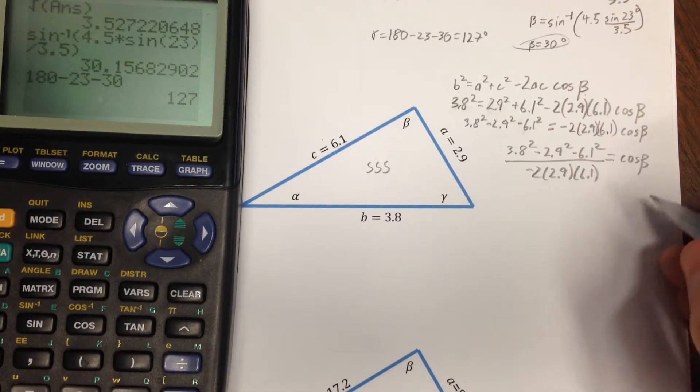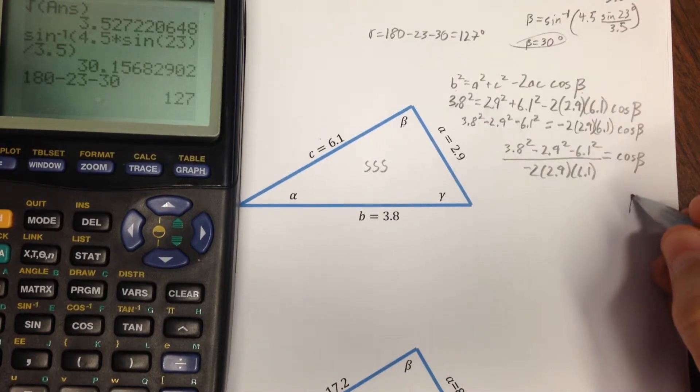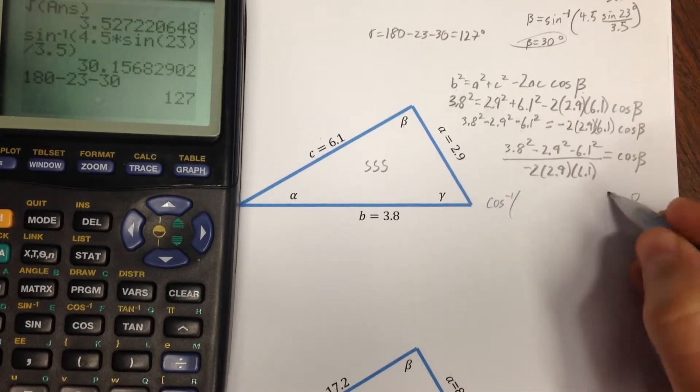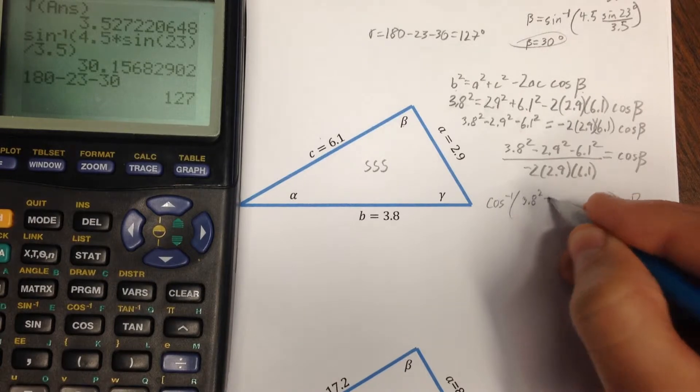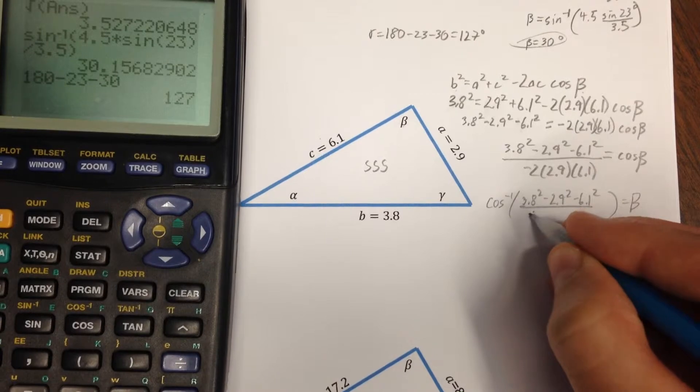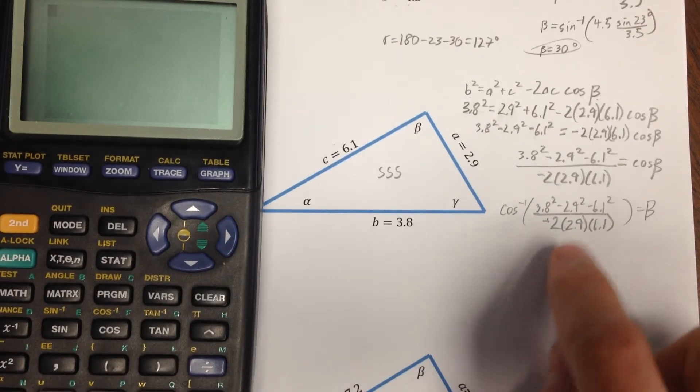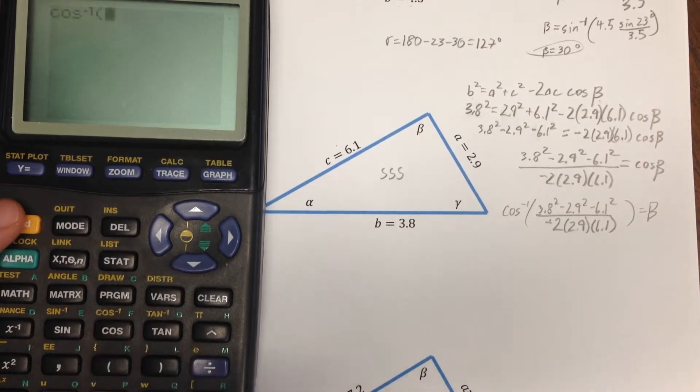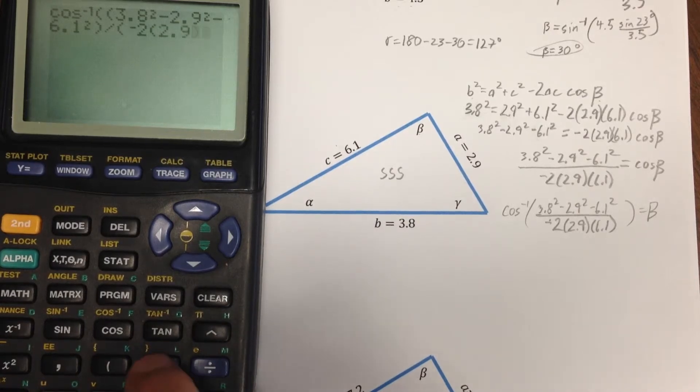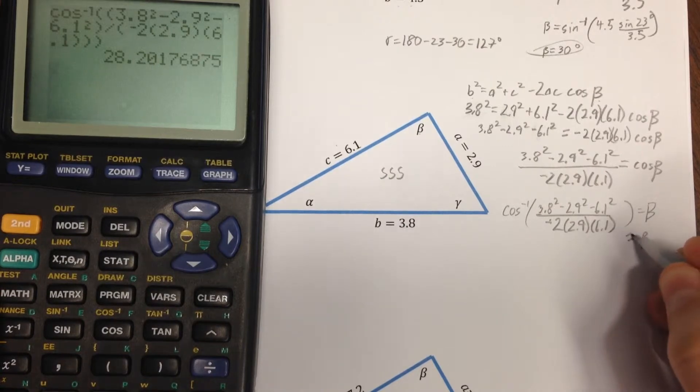But what I want is beta, so I'm going to take beta equal to cosine inverse of this piece right here. 3.8 squared minus 2.9 squared minus 6.1 squared over negative 2 times 2.9 times 6.1. When I'm plugging this into the calculator, the thing that I want to make, be careful about is to make sure all of that's in the denominator. So, cosine inverse of, here's my numerator, 3.8 squared minus 2.9 squared minus 6.1 squared. Close my denominator divided by, just close my numerator divided by negative 2 times 2.9 times 6.1. Now, I'm going to close my cosine inverse and I get a beta of approximately 28 degrees.